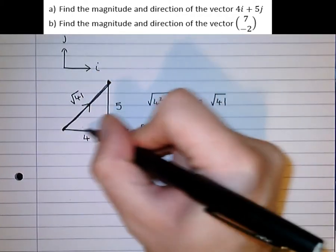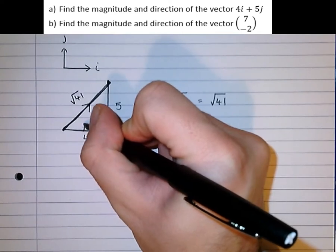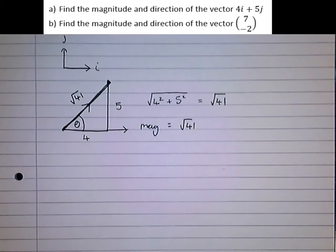We start on this axis here, the positive i axis, and move anticlockwise until we hit the resultant. This here is the angle that we're trying to find.